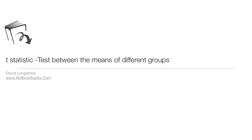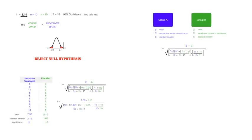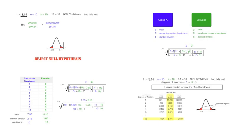In this tutorial, I'm going to talk about the t-statistic and the test between the means of different groups — for example, if you have an experimental group and a control group. I'm going to show you how to set up the hypothesis test and the equation that we will use, step you through each of the calculations using an example with numbers, and show you how to either reject or accept the null hypothesis.